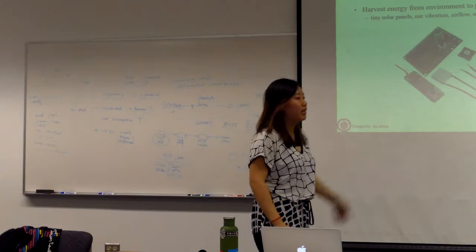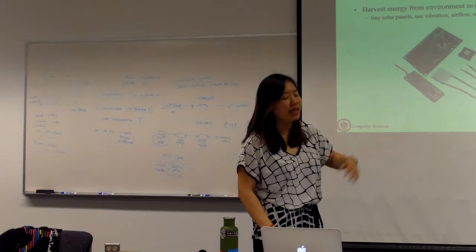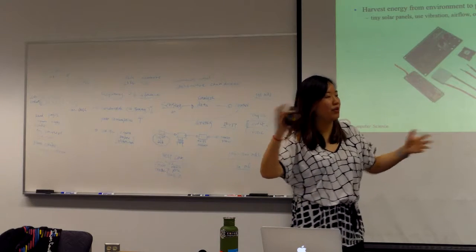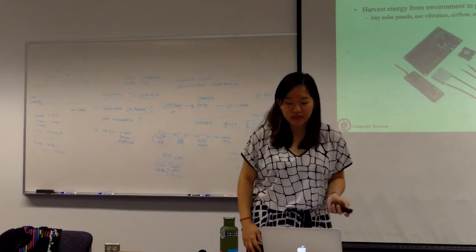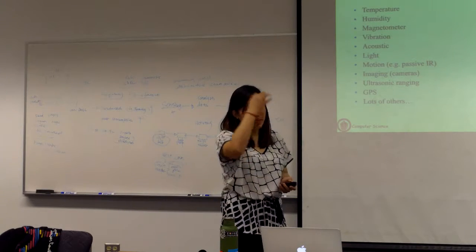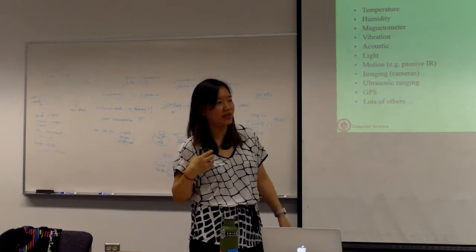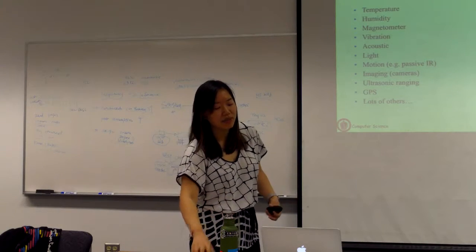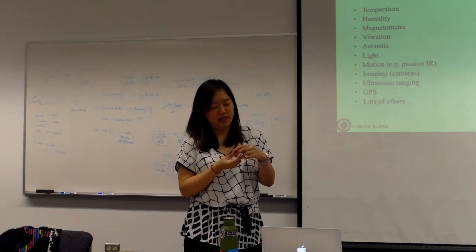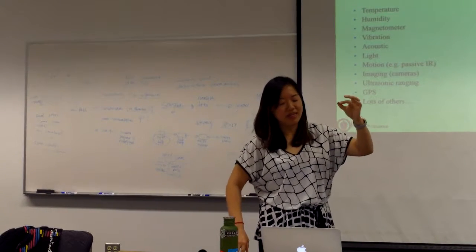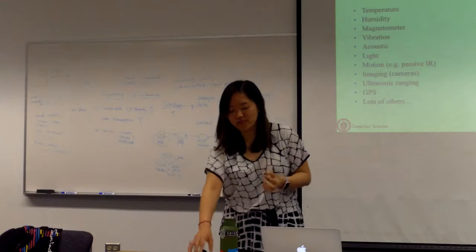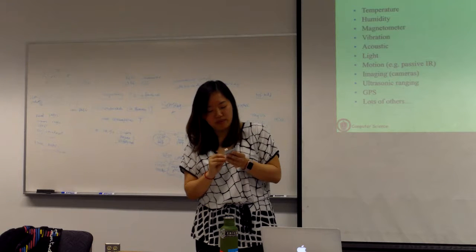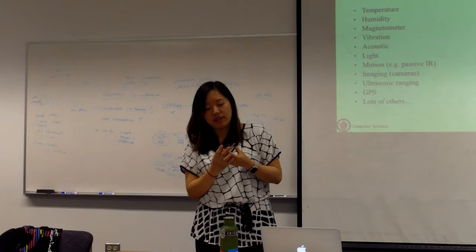Now let's move on to green computing. The idea is that we can use the sensor networks and platforms we talked about to make things green. The first area is making IT infrastructure green — specifically data centers. The second area is using data-driven analysis to make homes or offices green. We'll talk more about smart buildings in this context.